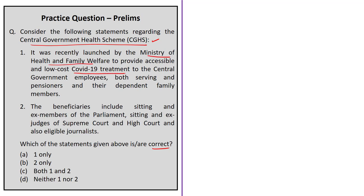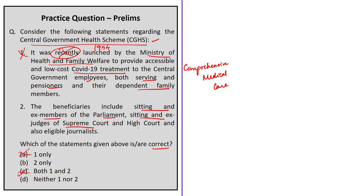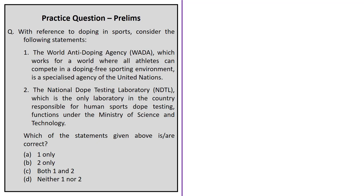The next description-based question describes a species present only in Gir forests of Gujarat in its natural habitat, which was India's national animal before 1973, and is now listed as Endangered under the IUCN Red List. The options are Asian elephant, Asiatic cheetah, Asiatic lion, and Bengal tiger. The correct answer is option C — Asiatic lion. The next question on CGHS: Statement 1 says it was recently launched for COVID-19 treatment — this is incorrect, as it was launched in 1954 for comprehensive medical care, not just COVID-19 treatment.